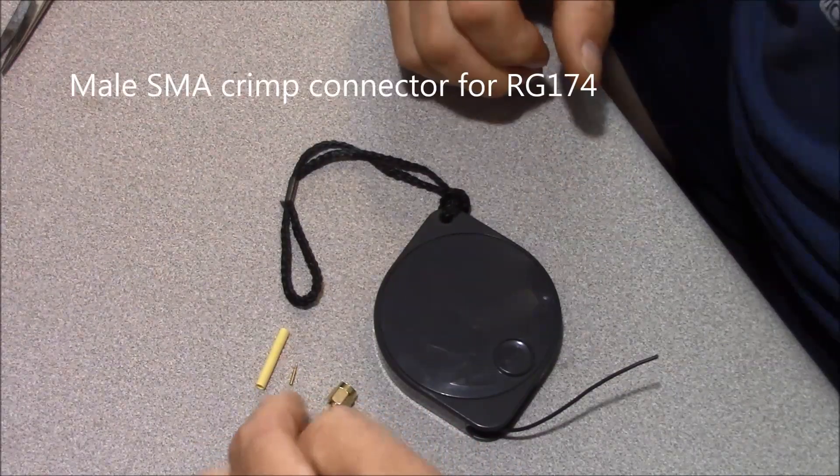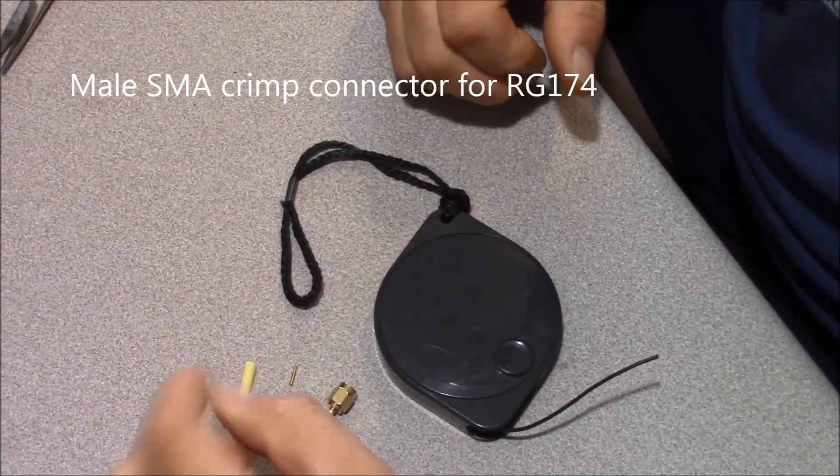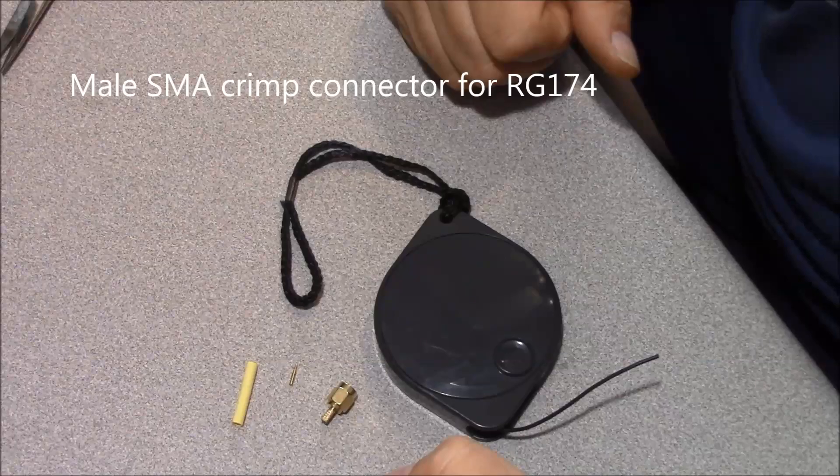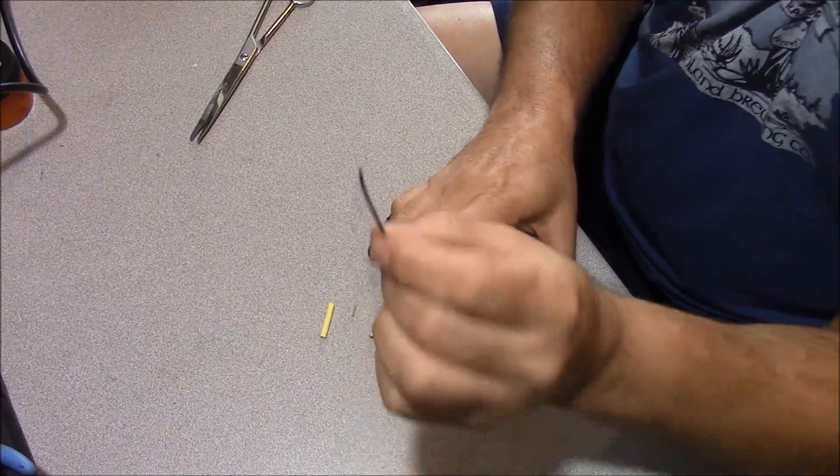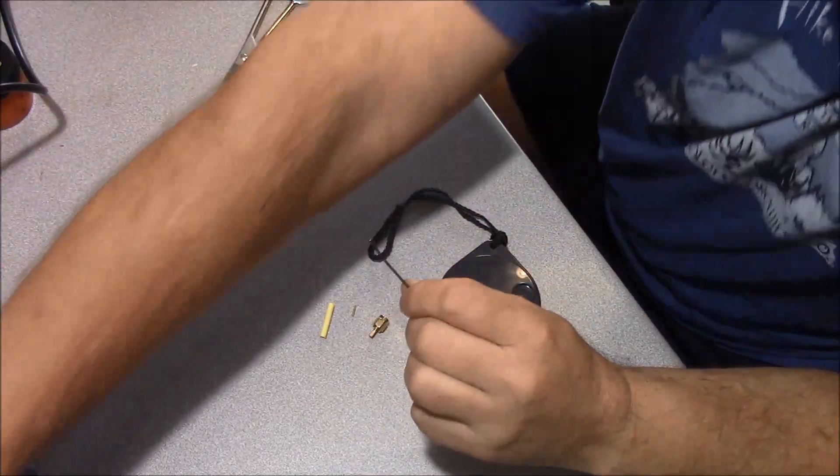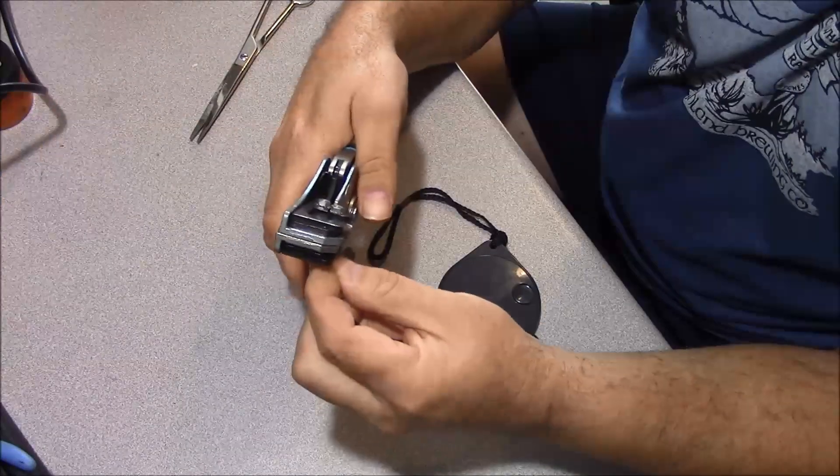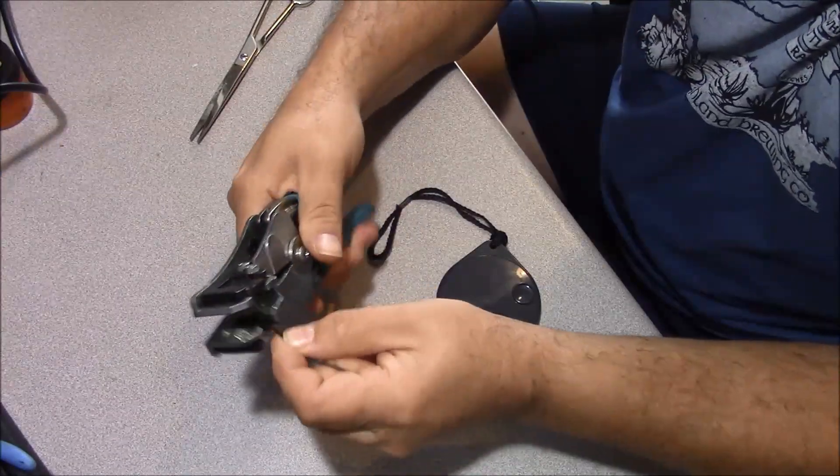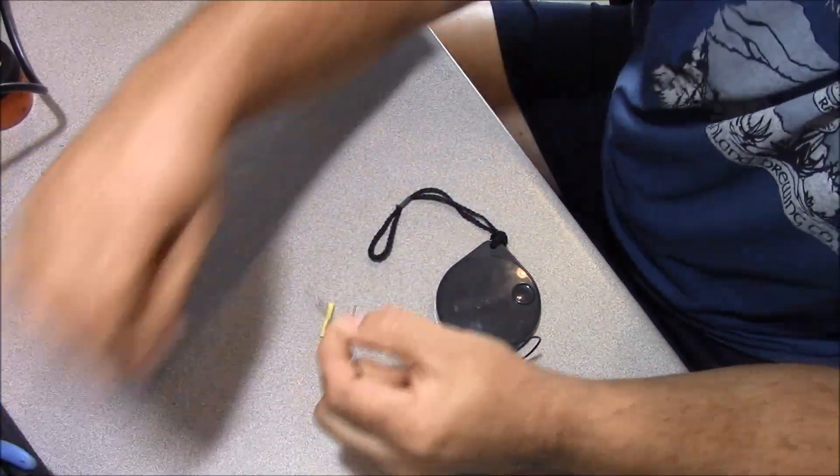Get yourself a crimp type of SMA connector, and you're going to use a small piece of heat shrink tubing as a strain relief. Now go ahead and pay out your wire. You're going to remove about a quarter inch of insulation from your wire. You can do that with a razor blade or a fancy stripper like that.